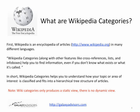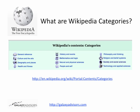In short, Wikipedia categories help you to understand how your topic or area of interest is classified and fits into a hierarchical tree structure of articles. You should know that Wikipedia categories only produce a static view — there is no dynamic view. If you go to the Wikipedia categories URL, located in the show more box beneath the video, you'll find that there are 12 general content categories that Wikipedia has classified all their millions of articles into.